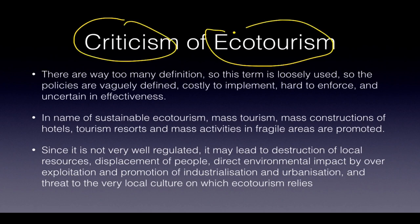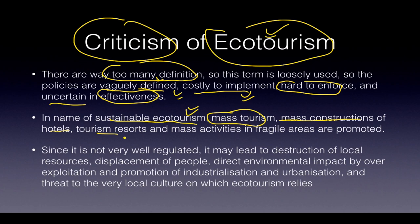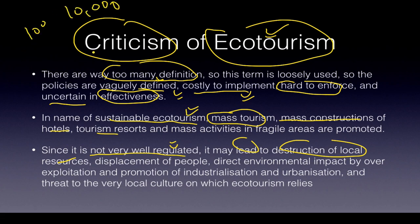There is also criticism of ecotourism. Since there are too many vague definitions, the term can be twisted and interpreted in any way. It is very costly to implement, hard to enforce, and uncertain in effectiveness. In the name of sustainable ecotourism, mass tourism gets promoted — mass construction of hotels and resorts in fragile environments, destroying local resources. Displaced populations lose their homes to hotels. Environmental load increases with thousands of visitors. It can lead to industrialization, urbanization, and ultimately threatens the very local culture on which ecotourism relies.